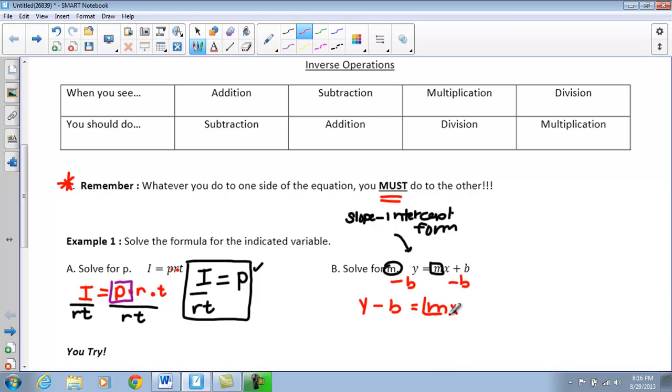So, now I have Y minus B equals MX. Now, I still want to have that M by itself. So, the next thing I am going to do is divide both sides by X. So, now when I rewrite, I have Y minus B over X equals M. Now, if we take a look to kind of check our answer, if the M is all by itself on one side of the equal sign, then we successfully solve for the indicated variable.